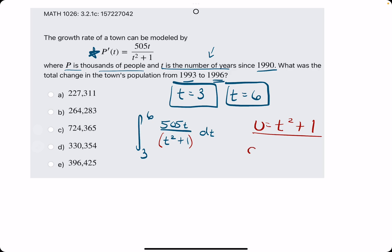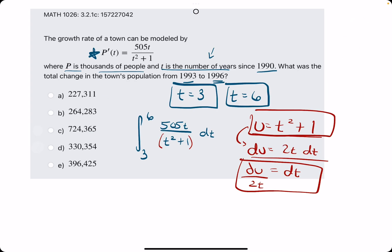So U is T squared plus 1. In this case, from that we find DU, the derivative of T squared plus 1, which is 2T. We tack on DT. We solve for DT by dividing by 2T.